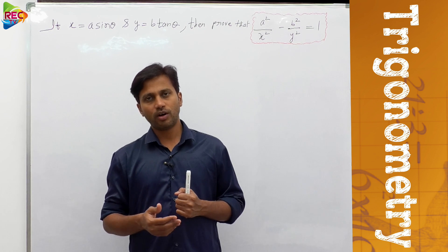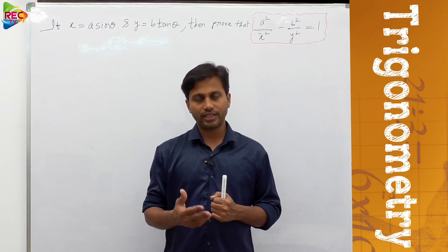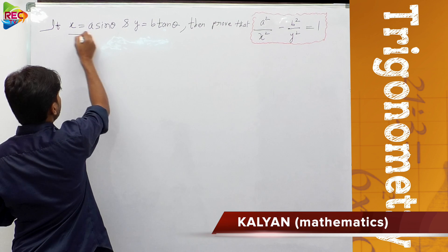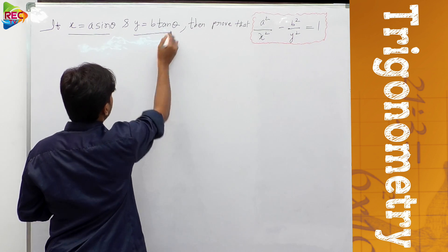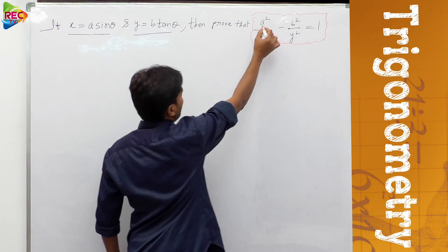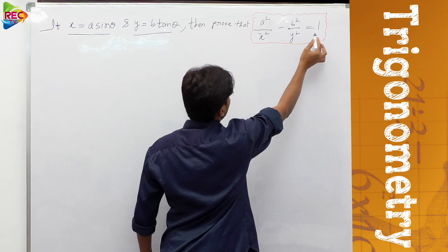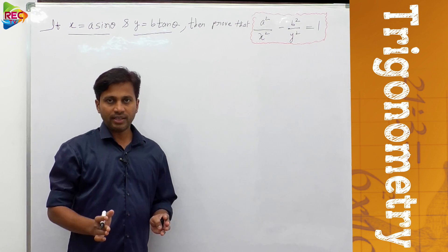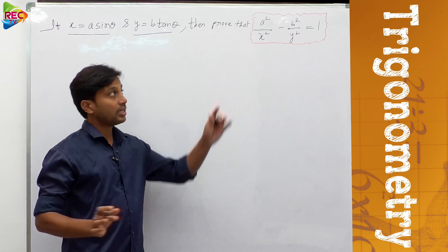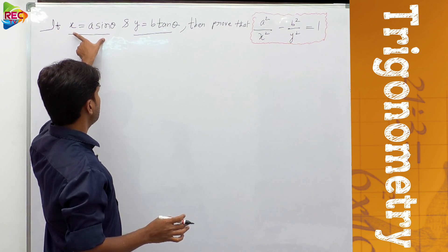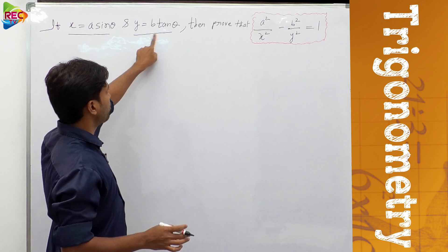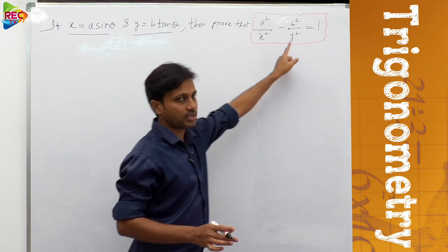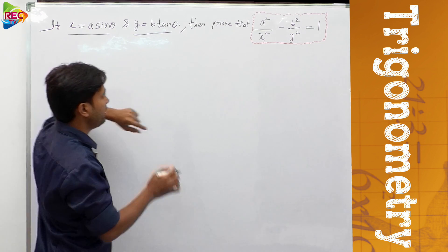Let us do the next problem on trigonometric identities. The problem is: if x equals a sin θ and y equals b tan θ, then prove that a²/x² minus b²/y² equals 1. We have two given conditions: x = a sin θ and y = b tan θ, and we need to show this result.